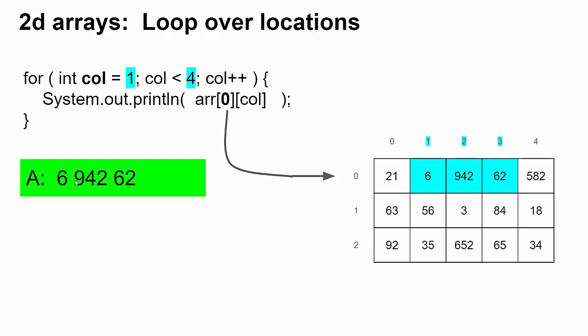It's going to display six, 942, 62. Column starts at one and goes up one, two, three, but it doesn't make it to four because you can see here, it says column has to be less than four.